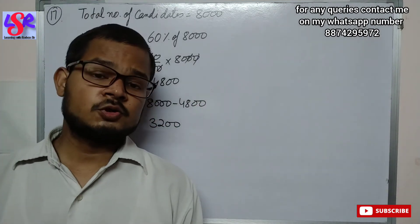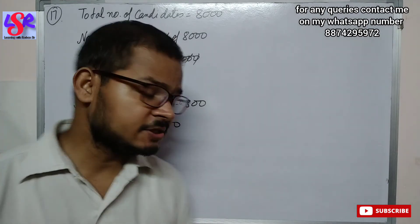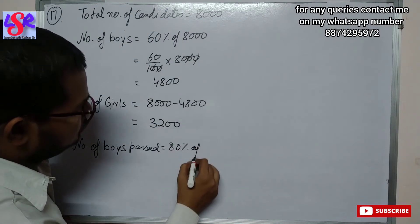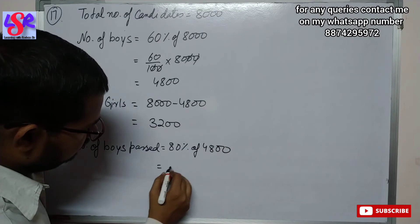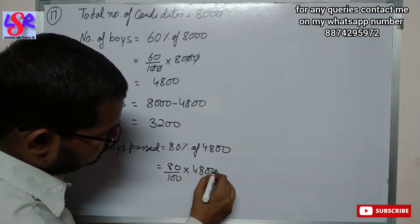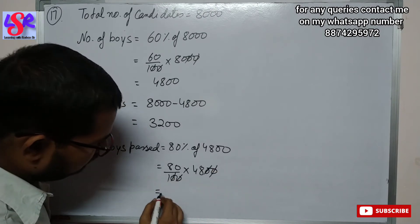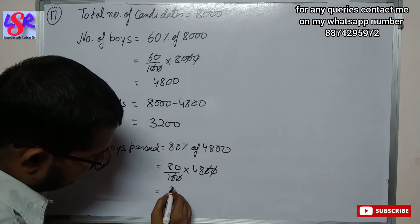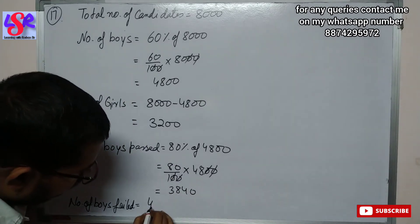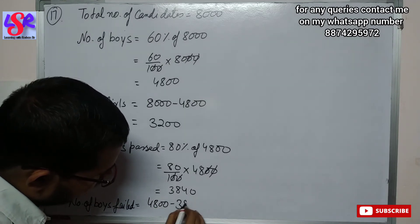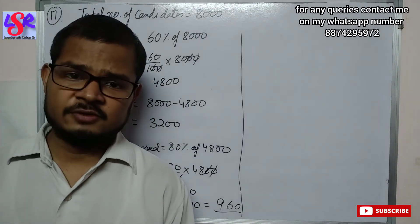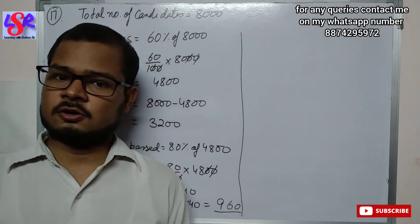The question says 80% of the boys passed. Number of boys passed equals 80% of 4800, that is 80 upon 100 into 4800. Canceling, we get 80 into 48, that is 3840. Number of boys failed equals 4800 minus 3840, that is 960.